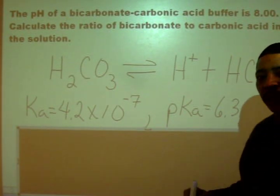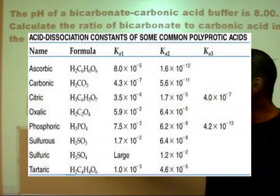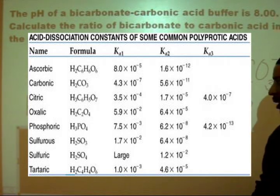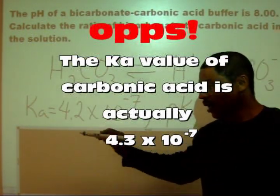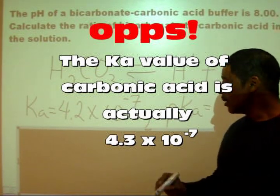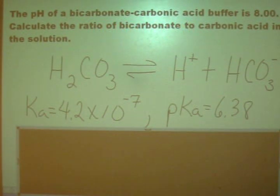From a table of acid Ka values, the Ka value for carbonic acid is 4.2 times 10 to the minus 7. Taking a negative log of our Ka, we calculate a pKa of 6.38.